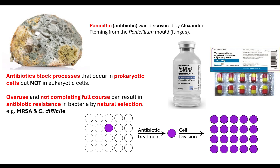Doctors can only prescribe antibiotics if they are sure that it is a bacterial cell causing the disease, which would be confirmed through staining. They need to know which antibiotic to give to the patient, so they may take a sample, send it to a lab, grow colonies of the bacterial cells, and do differential staining — whether gram positive or gram negative — to ensure they give the right antibiotic for killing that pathogen. This should reduce the potential for antibiotic resistance building up within the population.